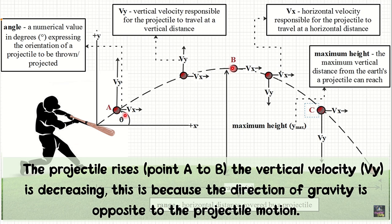This projectile rises from point A to point B. As it rises, the vertical velocity (V_y) is decreasing, because the direction of gravity is opposite to the projectile's upward motion. Gravity always pulls everything down, however the movement of the projectile is upward, so it negates the direction of gravity. That's why the vertical velocity of the projectile going upwards is decreasing.